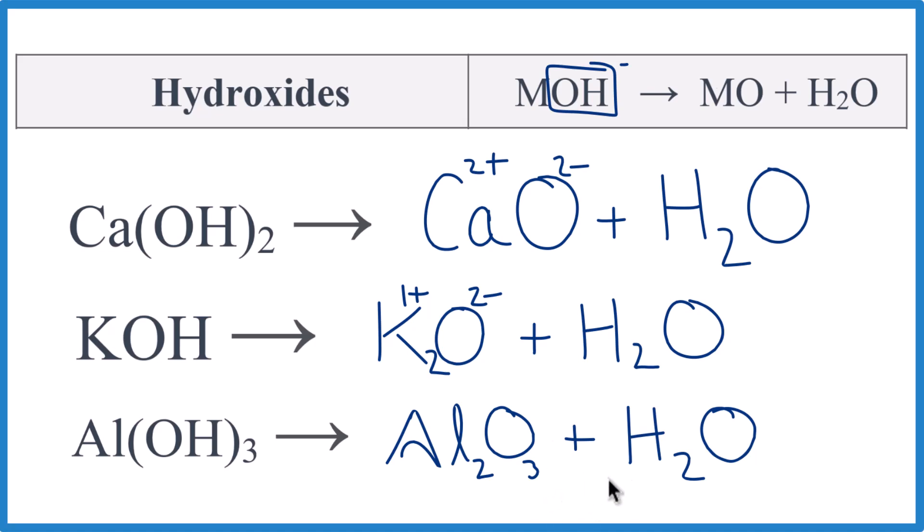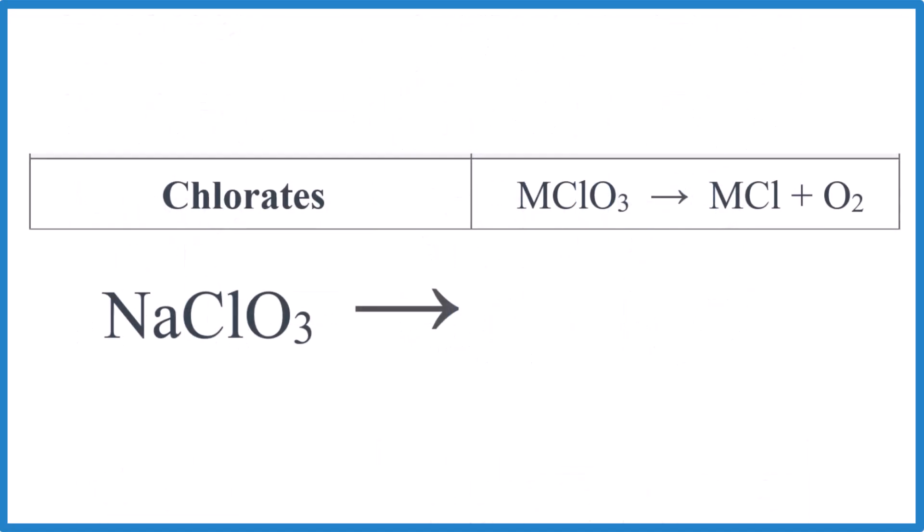Again, it's not balanced and we didn't write the states. But we don't need that to predict the identity of the compounds we end up with. All right, let's try some more. We're getting there. And we have some practice at the end. Let's do the chlorates here.